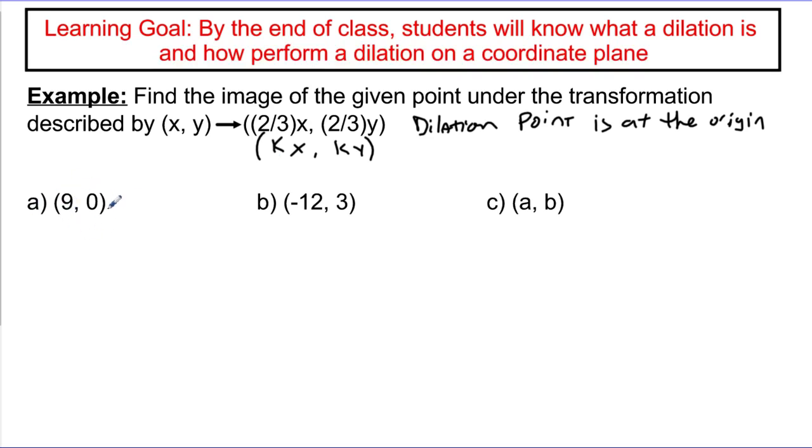So here's a simple example. If we wanted to dilate the point 9, 0 by a factor of K value of two-thirds, we're going to – so this would be like zooming out on our Google map. We would actually do two-thirds of nine. Well, two-thirds of nine is just six. And if I did two-thirds of zero, well, anything times zero is zero. So I know that the point 9, 0 is going to go to the point 6, 0.